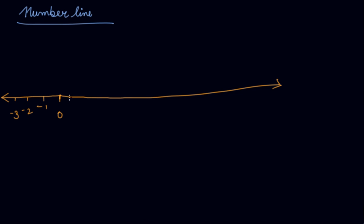On the right side, we keep on increasing the numbers: 1, 2, 3, 4, 5, 6, 7, 8, 9, and 10. Now this is the number line.